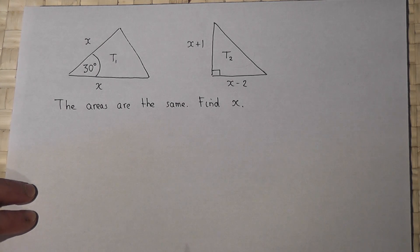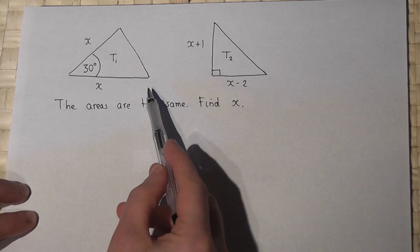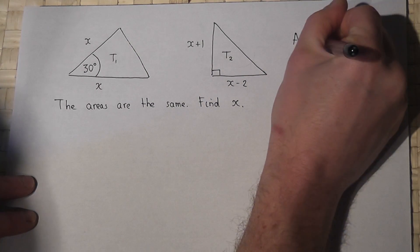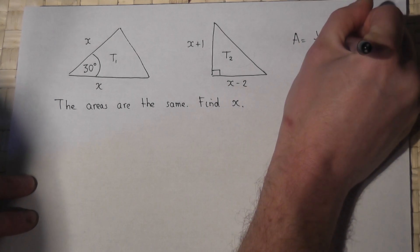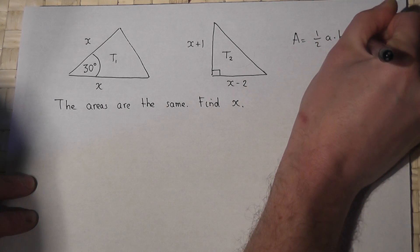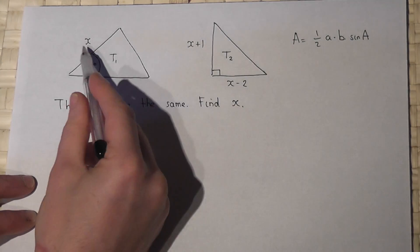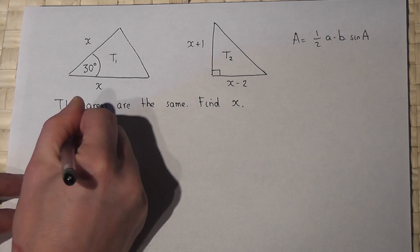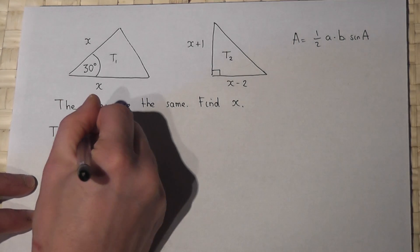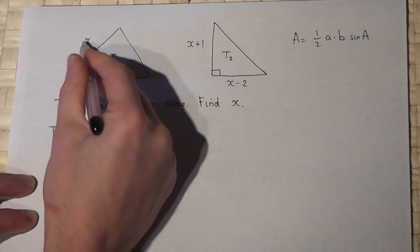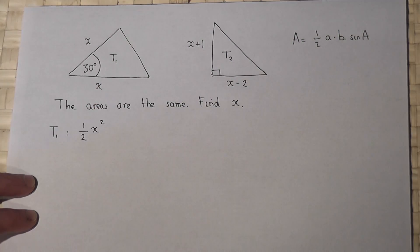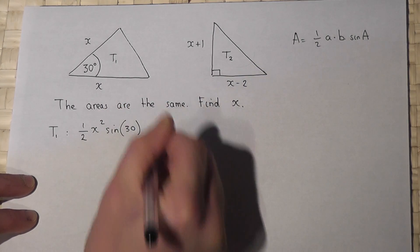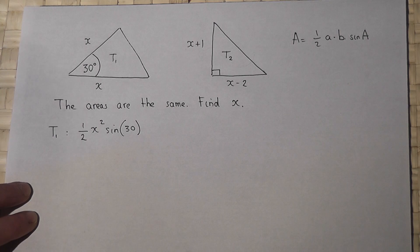Now for triangle one, when you know two sides and an angle contained within them, the area is given by a half a times b times sine of the angle. So a and b are the two sides and theta is the angle. So for triangle one the area is a half x times x, which is x squared, times sine of the angle which is 30. We'll leave it like that just for the moment.